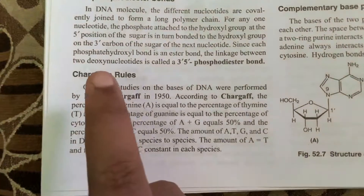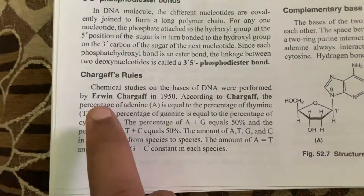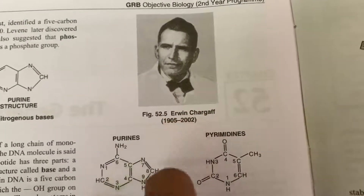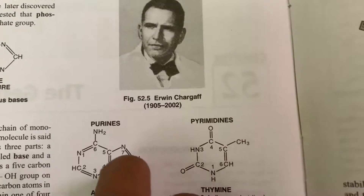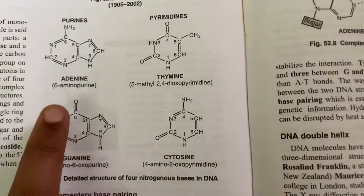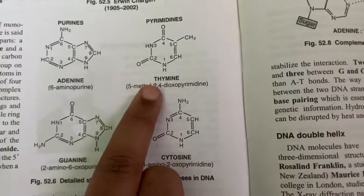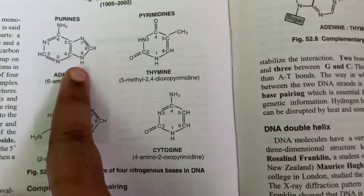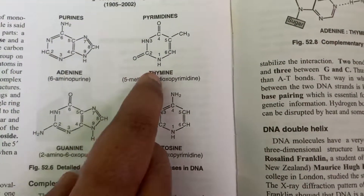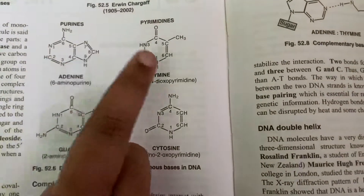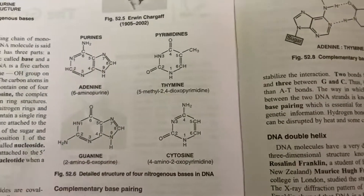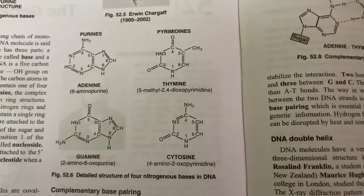This rule we call Chargaff's rule because it was discovered by Erwin Chargaff. The number of purines will always equal the number of pyrimidines. The purines are adenine and guanine; the pyrimidines are thymine and cytosine. So the number of purines will always equal the number of pyrimidines — if the purines are 50, then the pyrimidines will also be 50, because purines bond with pyrimidines. Adenine and thymine have double hydrogen bonds; guanine and cytosine have triple hydrogen bonds. This is Chargaff's rule.